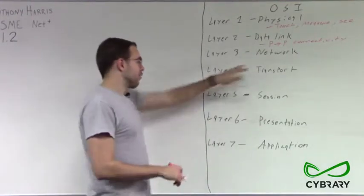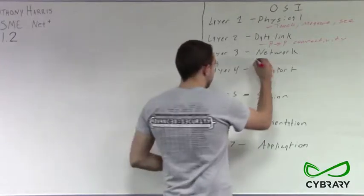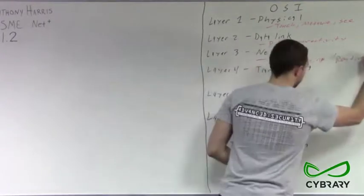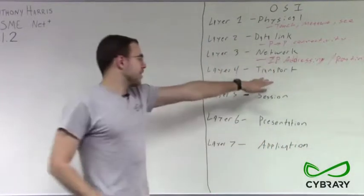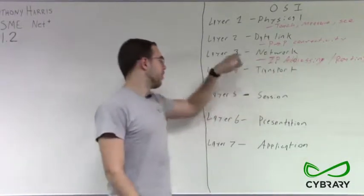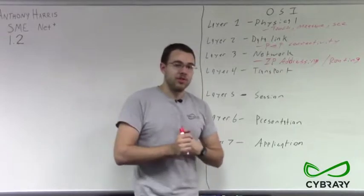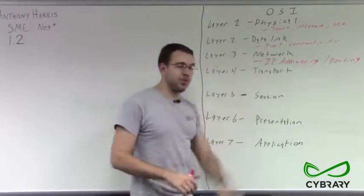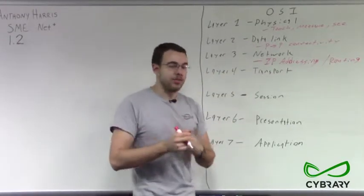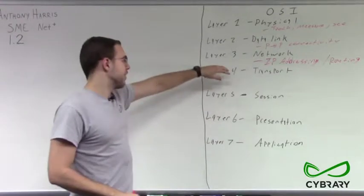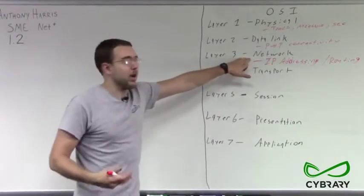Next, we have our layer three. Our layer three network layer is going to be again our IP slash routing. So our IP addressing slash routing is going to fall under our layer three. So our routers, our multi-layer switches, which are layer two and layer three, our layer three switches are all going to be under this layer three network layer.